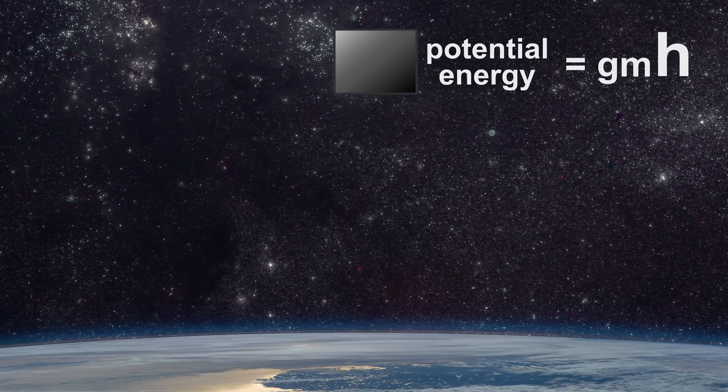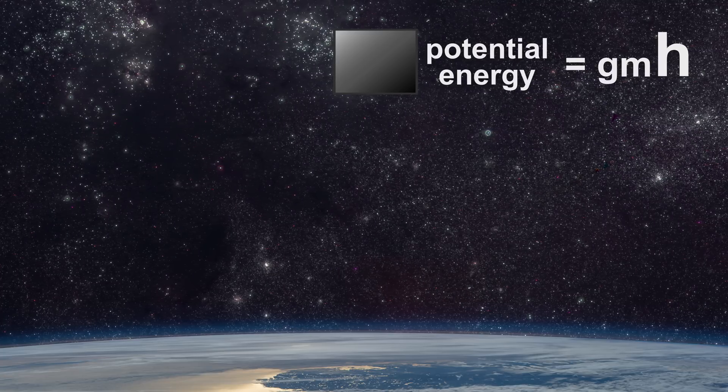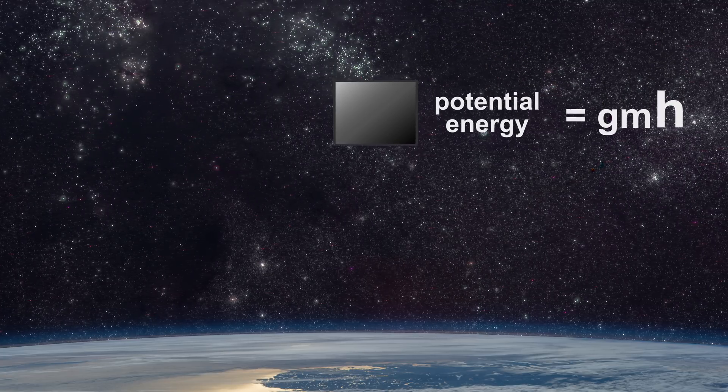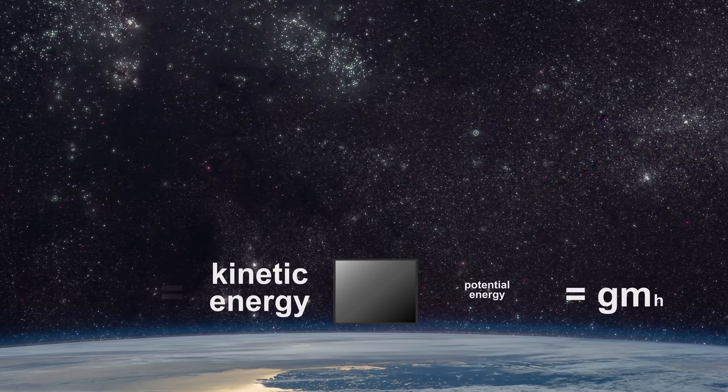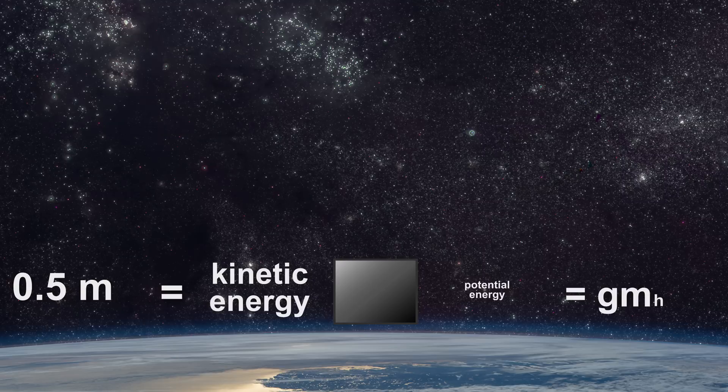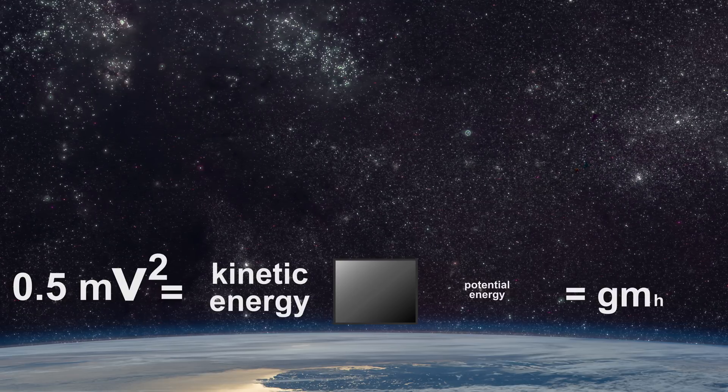The higher we bring up the iron cube, the greater its potential energy. If the cube fell, the potential energy becomes energy of motion, or kinetic energy, which is equal to one-half times the mass of the iron cube, times its velocity squared.